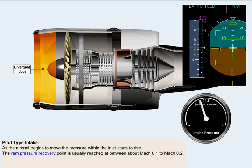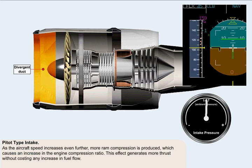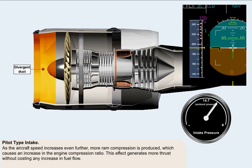As the aircraft begins to move, the pressure within the inlet starts to rise. The ram pressure recovery point is usually reached at between Mach 0.1 to Mach 0.2. As the aircraft's speed increases even further, the ram effect produced by the speed increase, combined with the shape of the inlet, produces more and more ram compression, which causes an increase in the engine compression ratio. This effect generates more thrust without costing any increase in fuel flow.